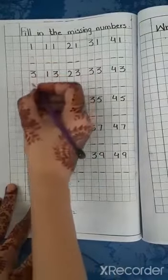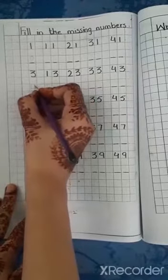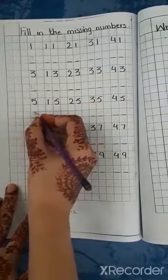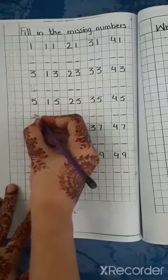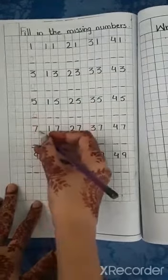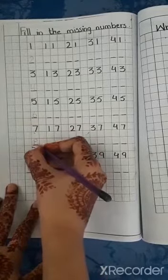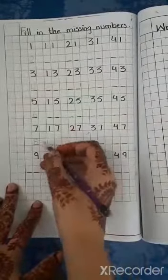2, 3, 4 is missing number. 5, 5 के बाद आता है 6, 6 is missing number. 7, 7 के बाद आता है 8, 8 is missing number.